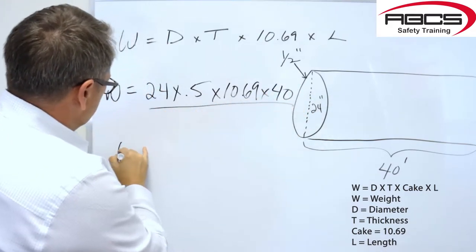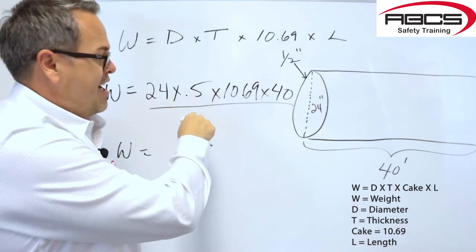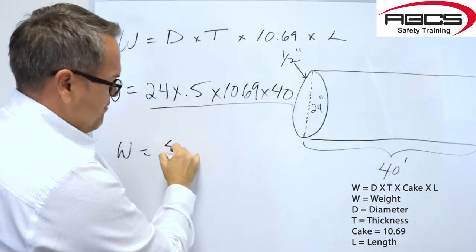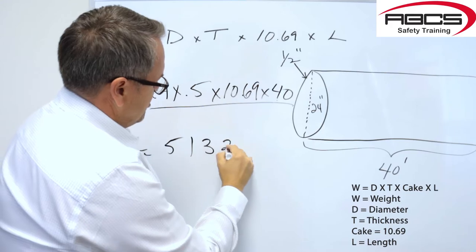Just multiply that straight through. The weight of the pipe equals 24, times 0.5, times 10.69, times 40, and you end up with 5,132 pounds.